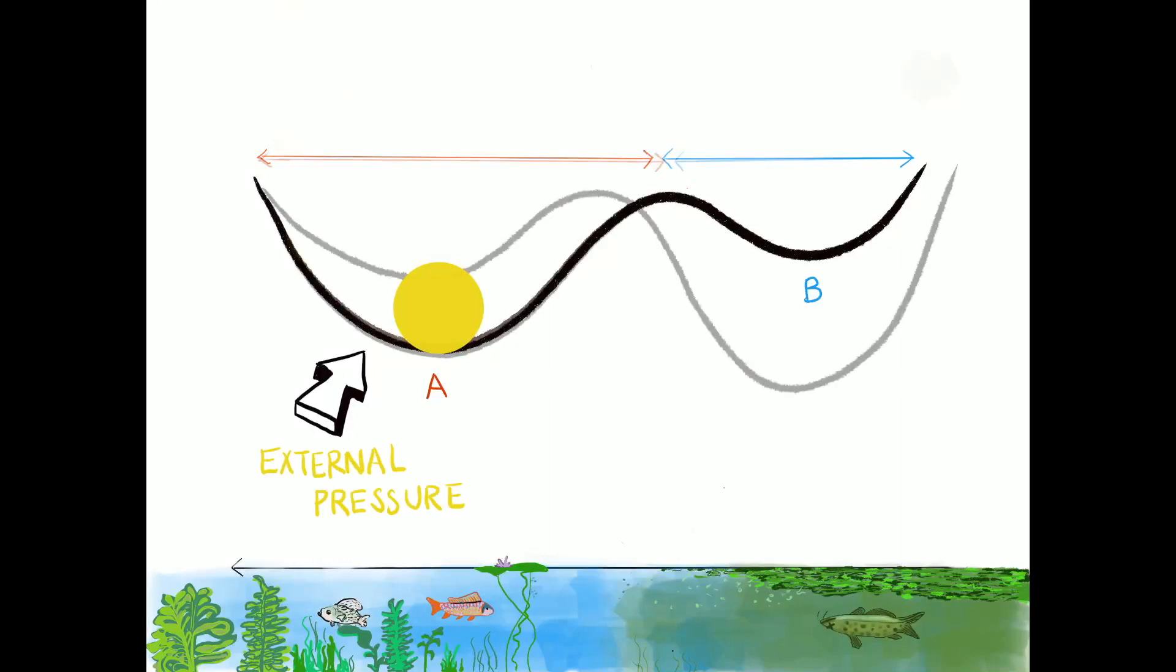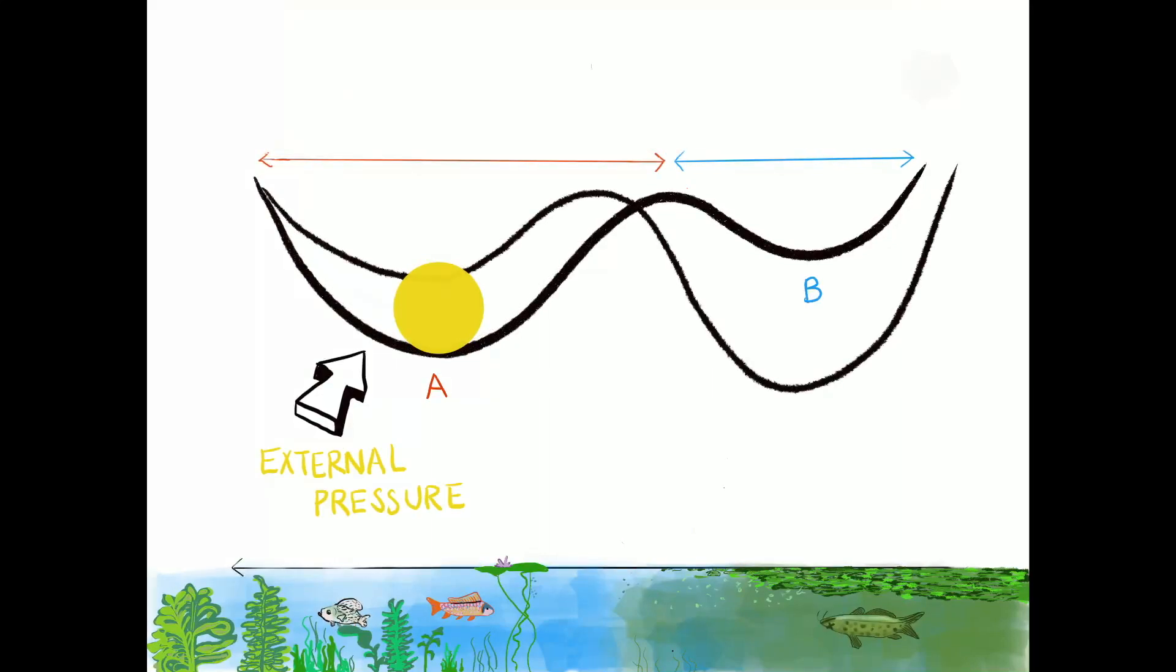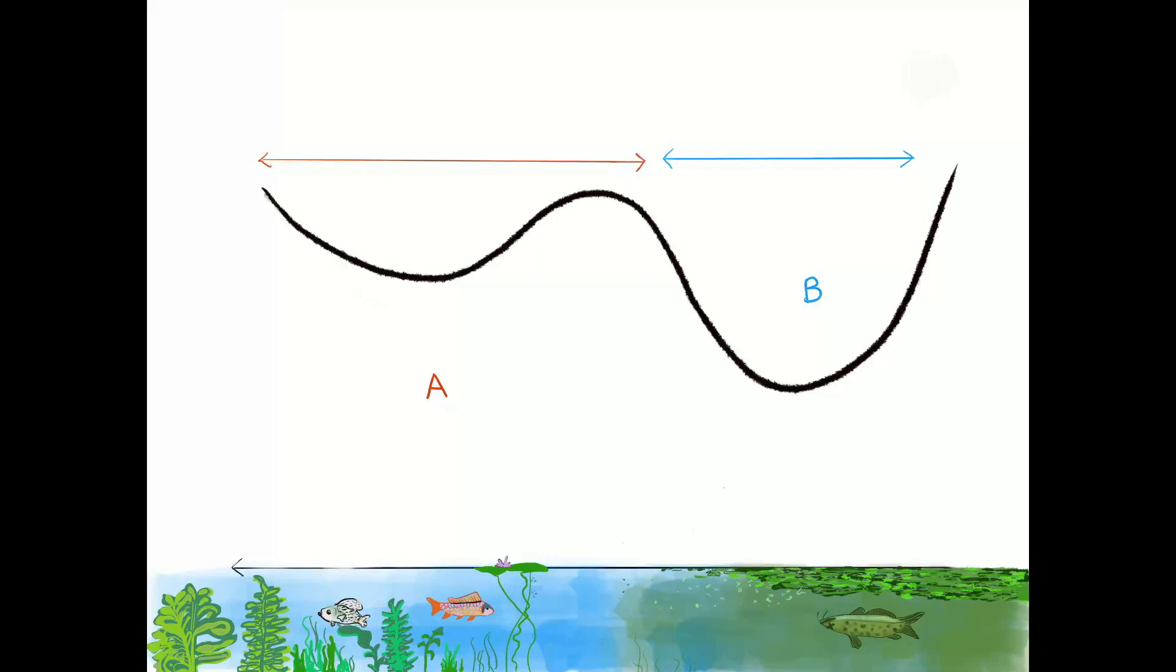Now imagine that external pressure on the system increases. By doing this, the basin of attraction of state A is becoming smaller. And with that, the ecological resilience of state A decreases.